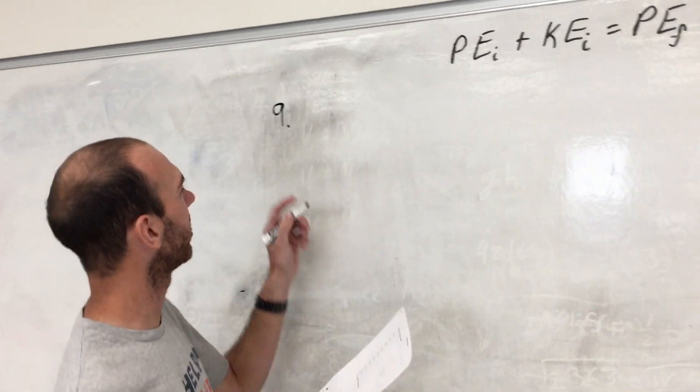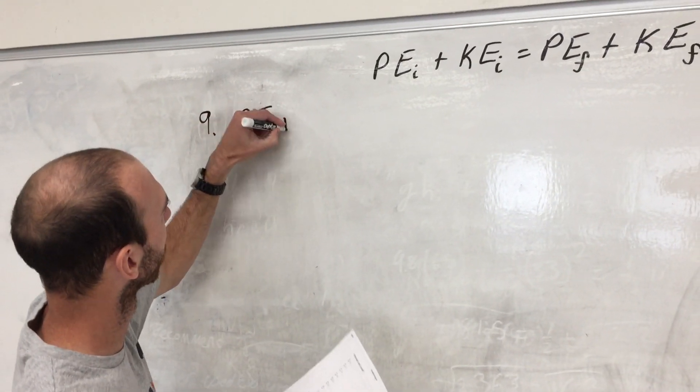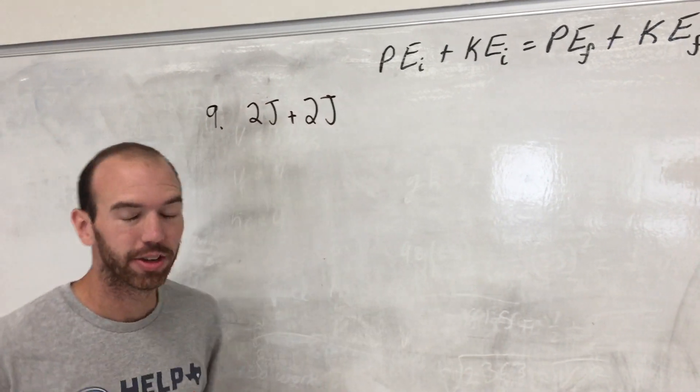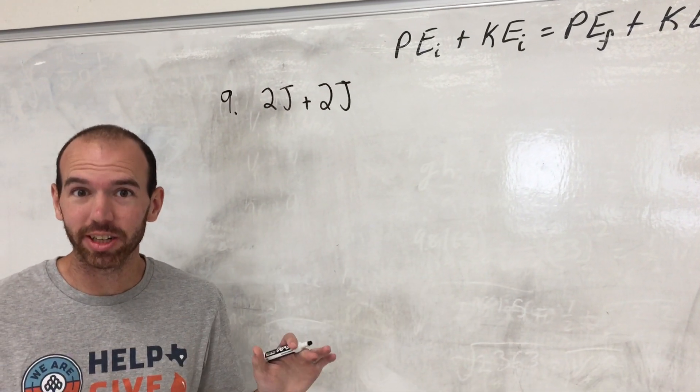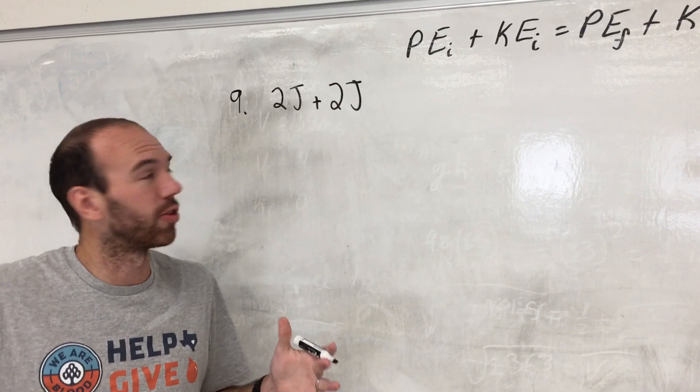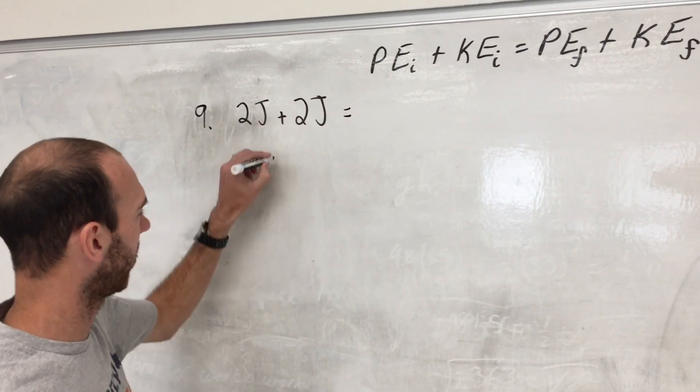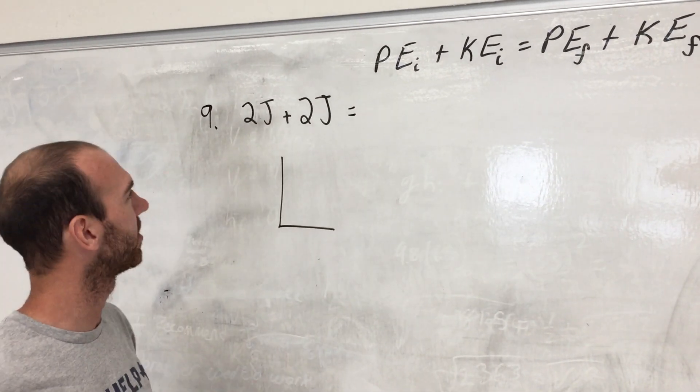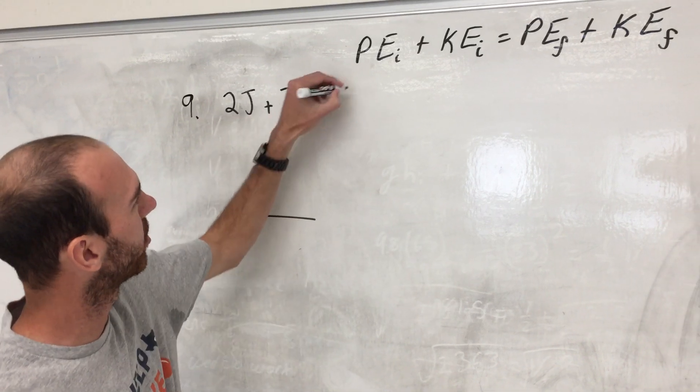Alright, so number nine is what is two joules plus two joules. Now great thing about energy, it's not a vector, it's a scalar, so they don't have directions. All we've got to do, we don't have to do any sort of right triangles with west and east and stuff, all you got to do is add those up. So what's two plus two?